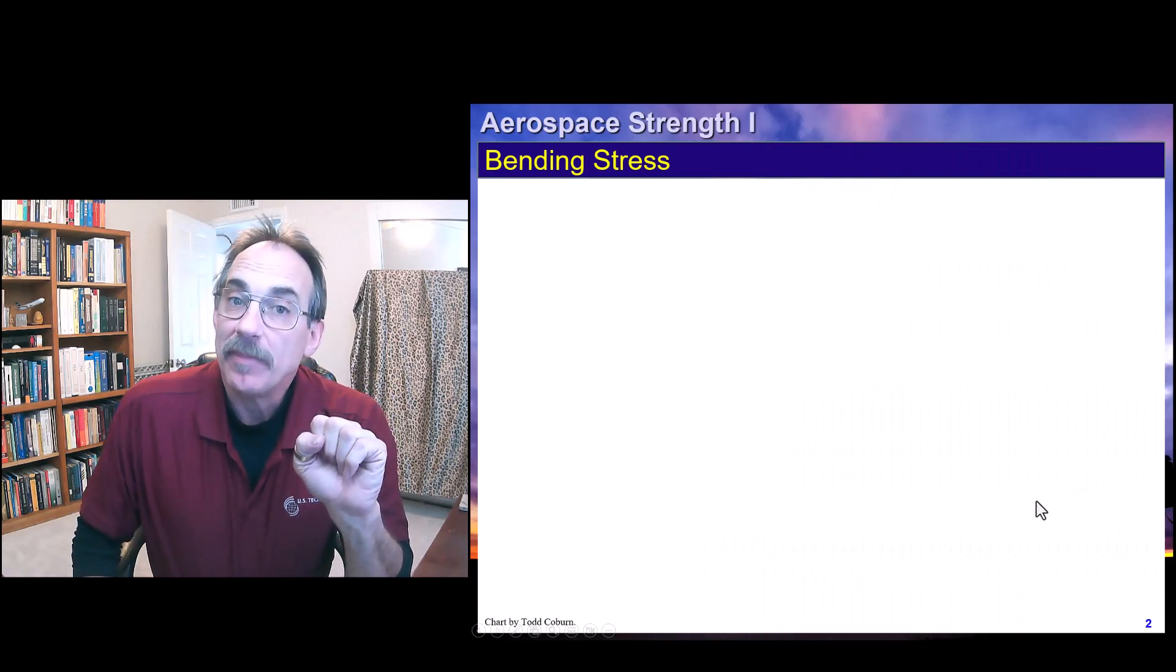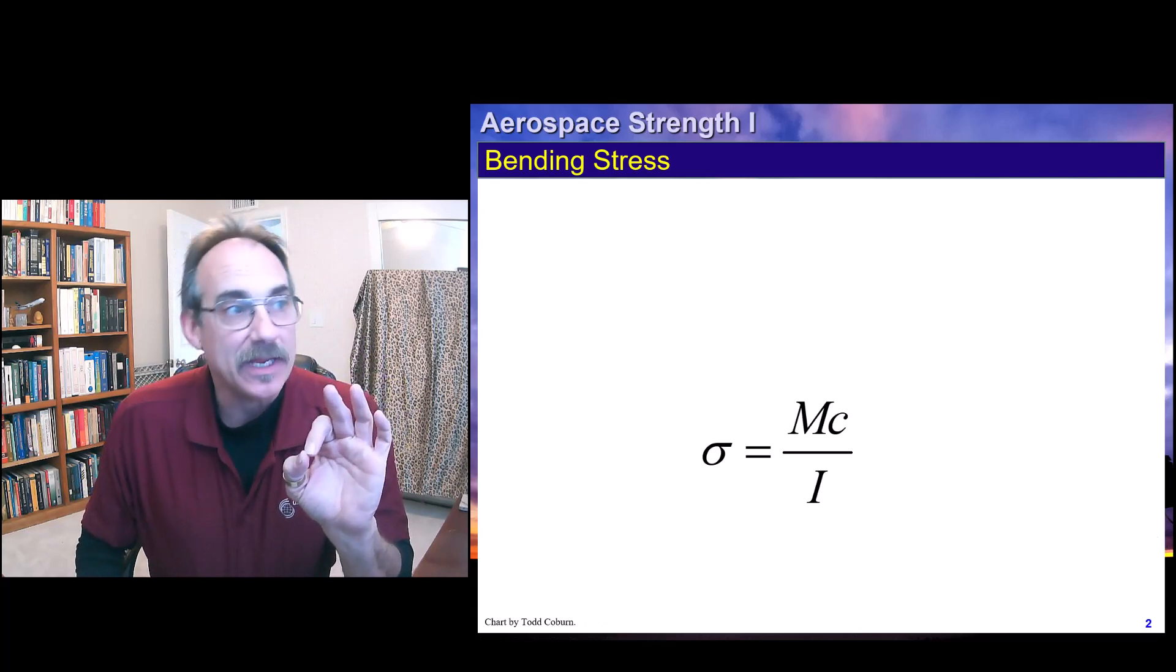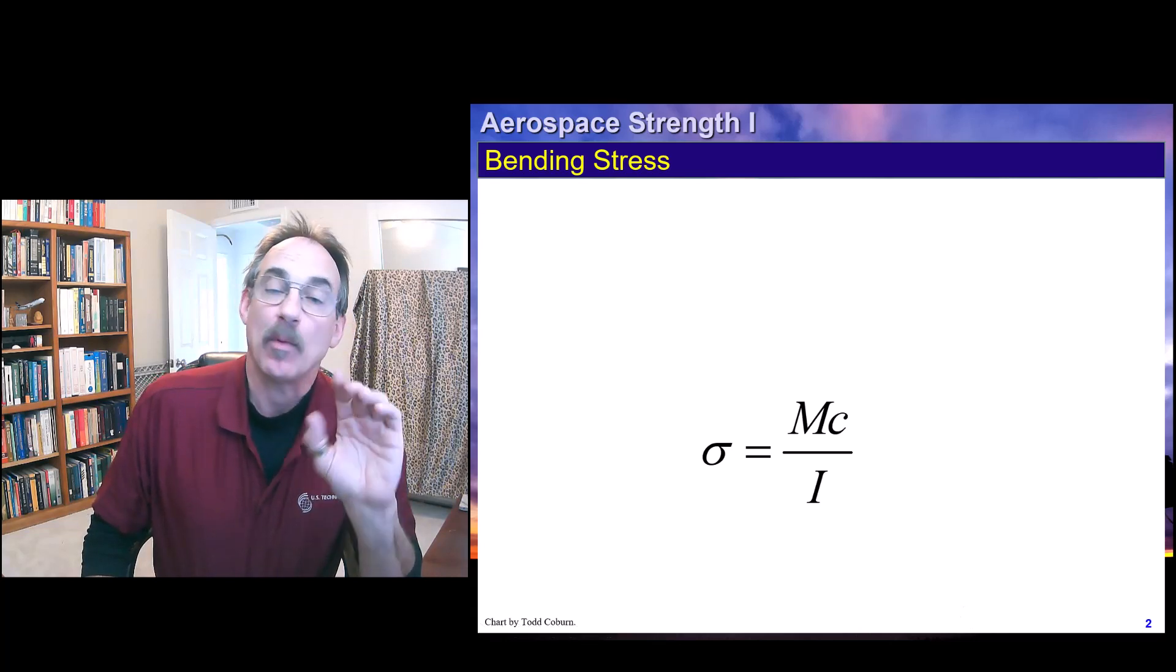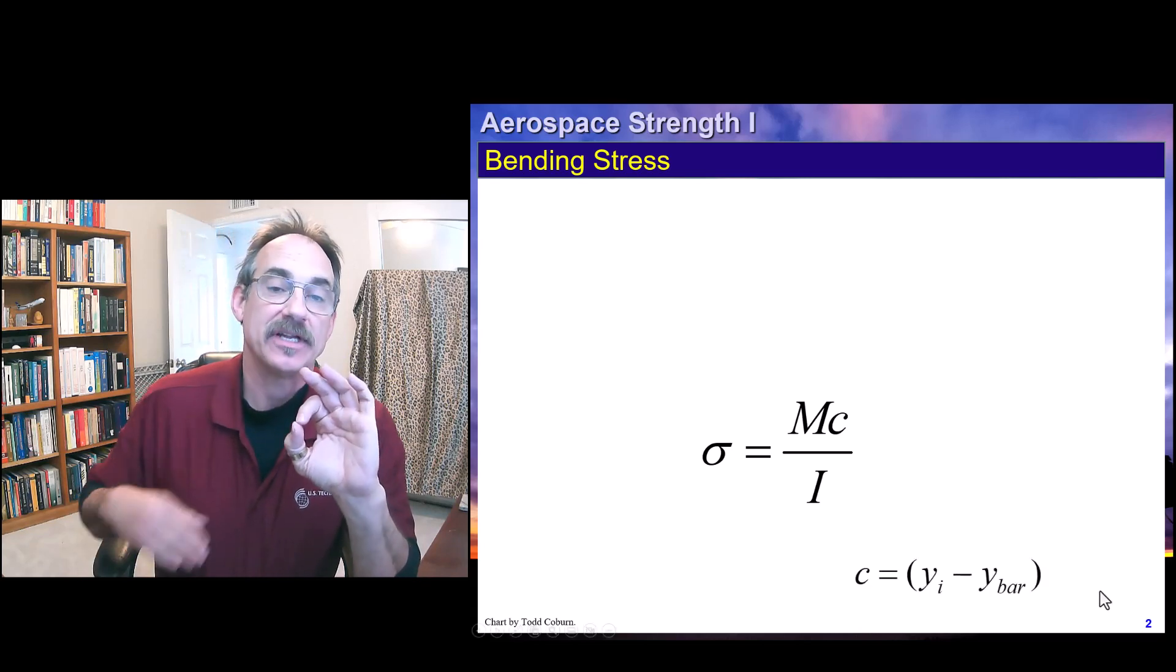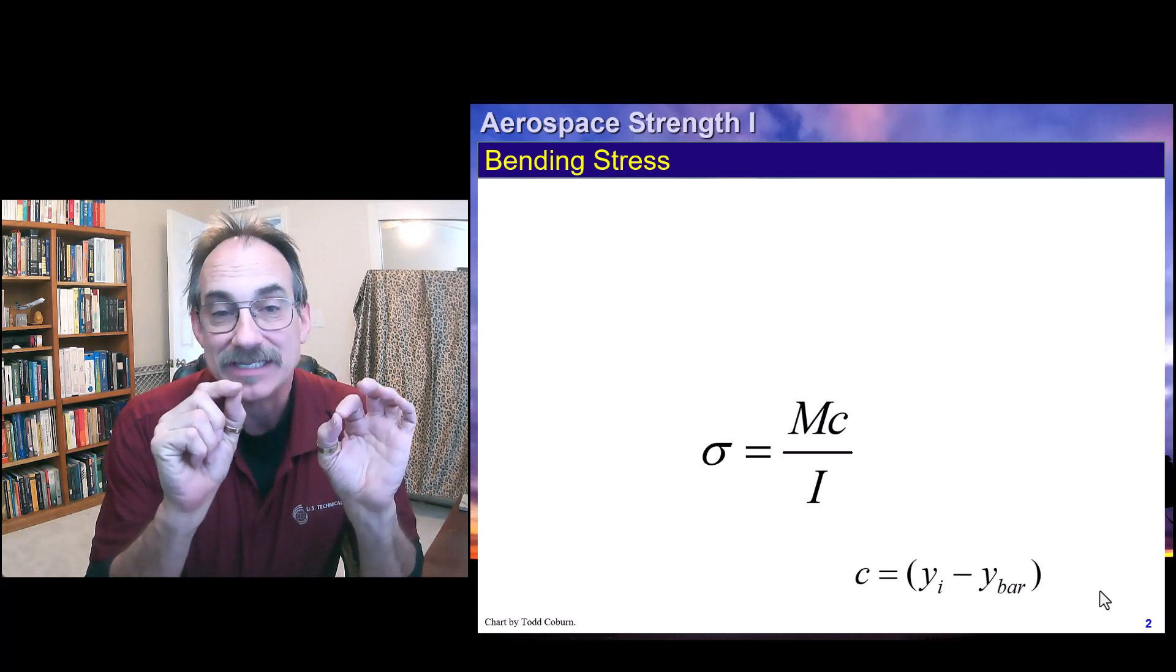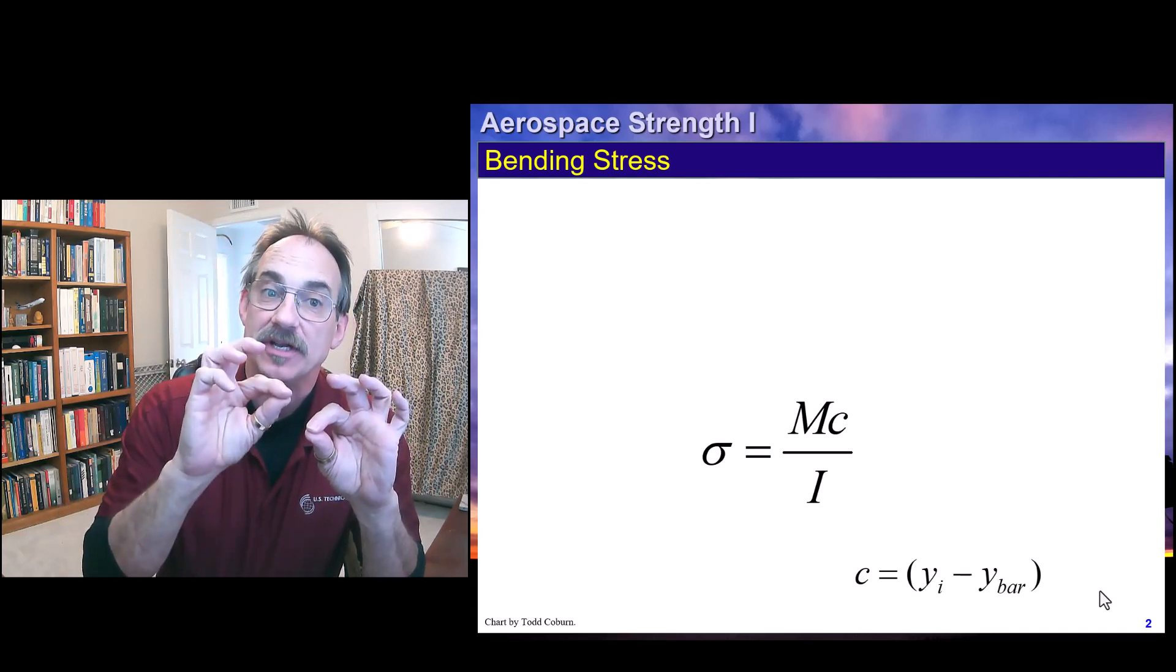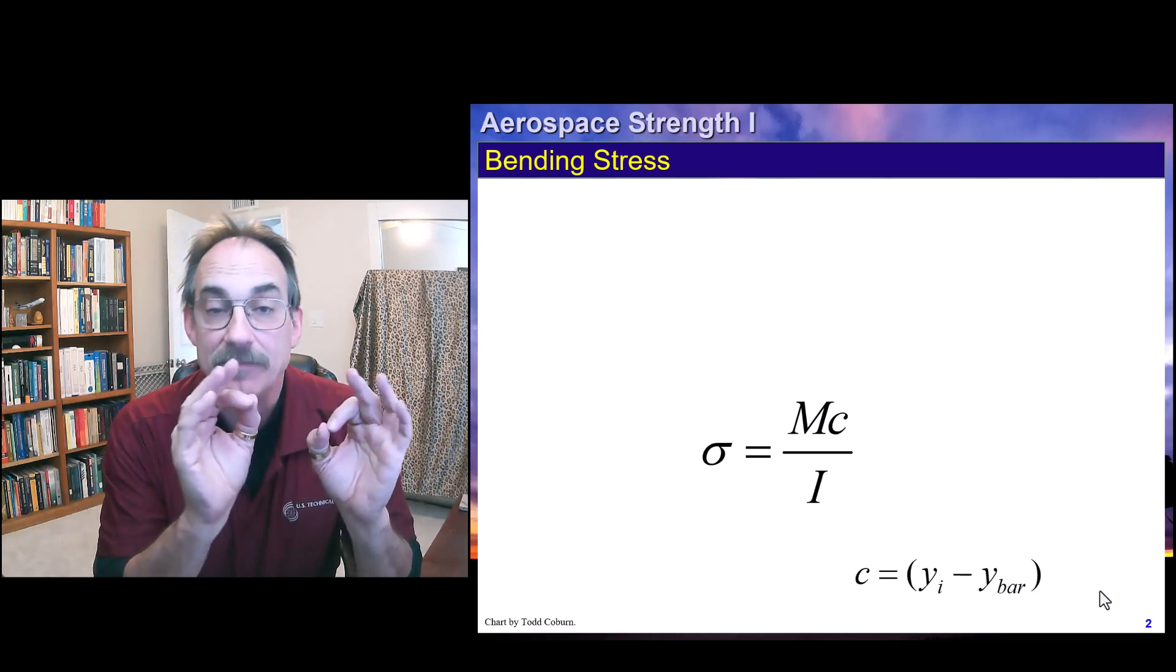So the basic bending formula that you need to have as a part of your daily speech is mc over i. The stress is equal to the moment times c over i, where c is the distance from the centroidal axis. In my book and in all the lectures, I focus on a more precise definition of c, where c is just the y position at any point minus the y bar of the section. But the way we generally remember this in industry is the stress is mc over i.